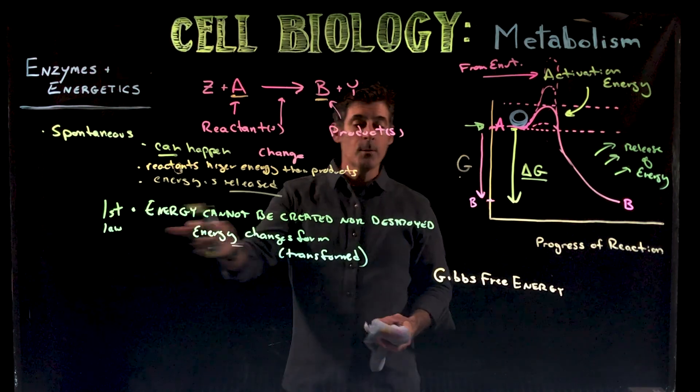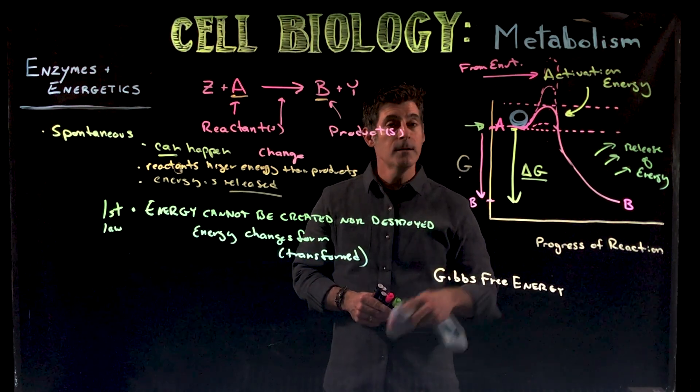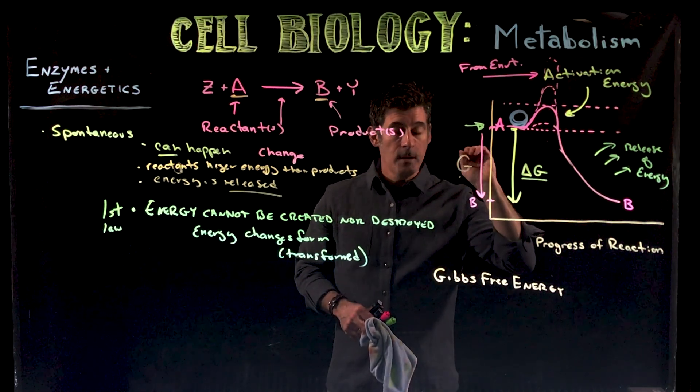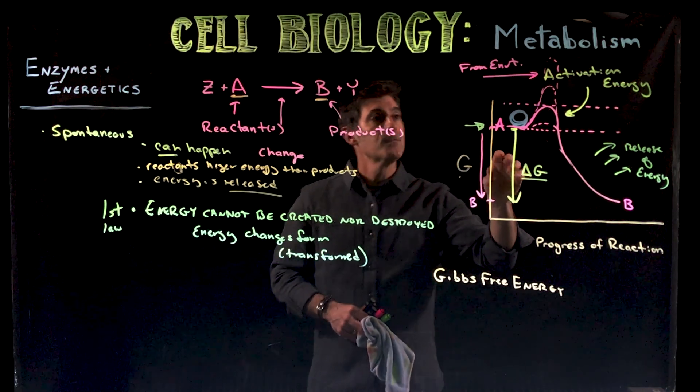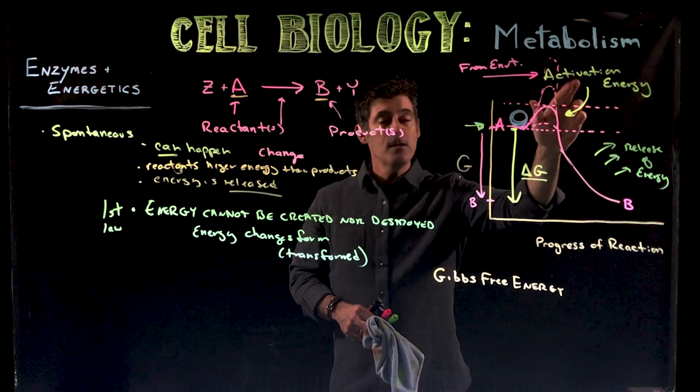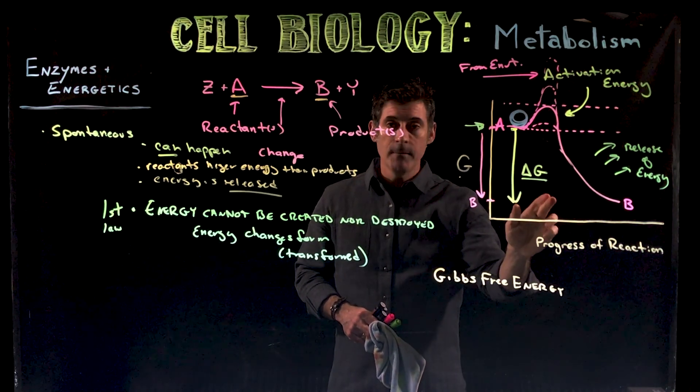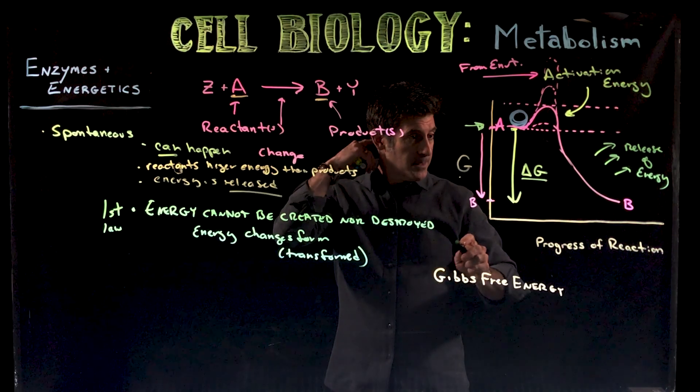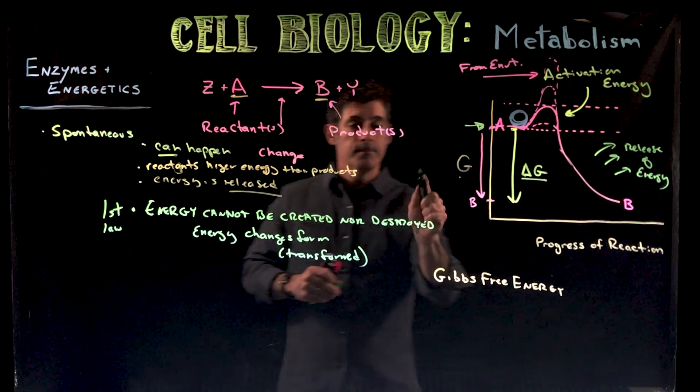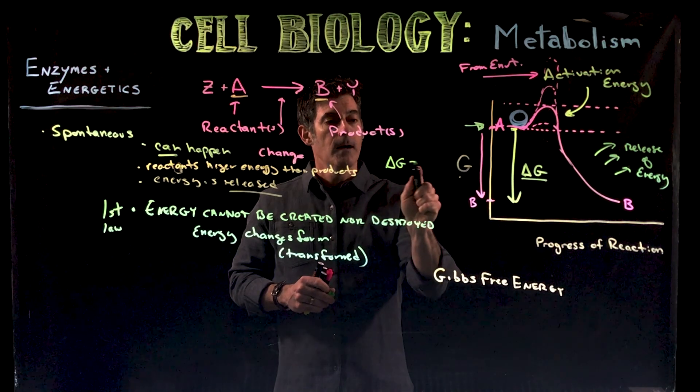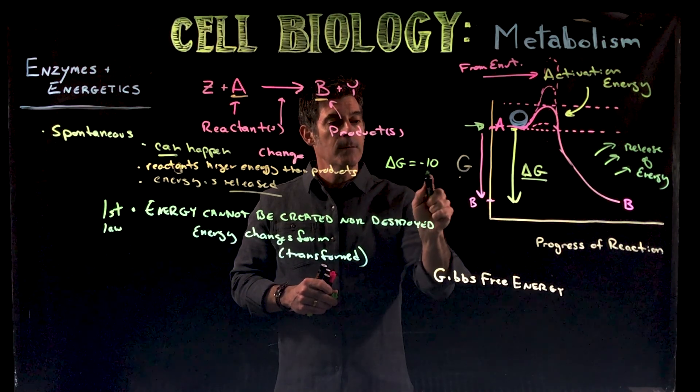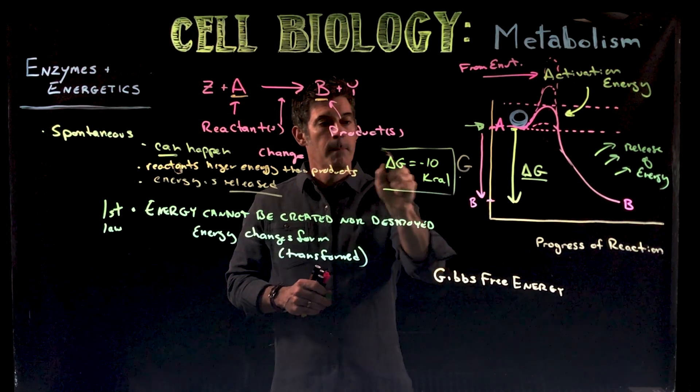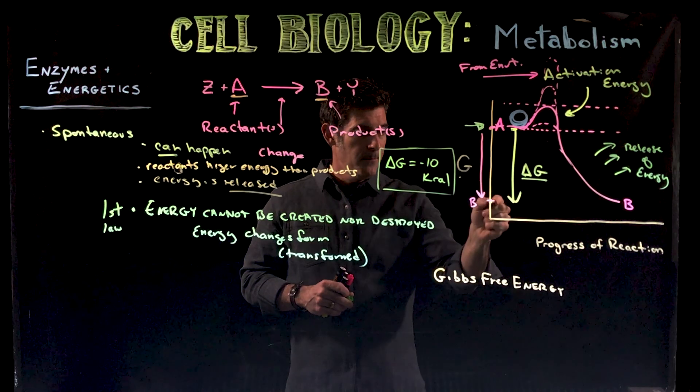That's related to what we call the first law of thermodynamics - the energy isn't created or destroyed. These two energies have to be considered separate from one another. Again, the activation energy is supplied from the environment, not from this. So if this delta G value was equal to negative 10, that would be in kilocalories, that's the change in free energy.